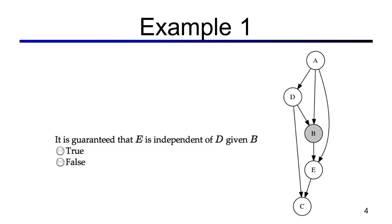Let's take a look at example one. What can we say about e and d when we're given evidence variable b? Let's consider the path d, a, e. That path consists of one triple. That one triple is active, so the entire path is active. We found an active path, which means we cannot guarantee the independence of e and d given b.